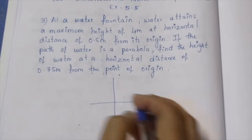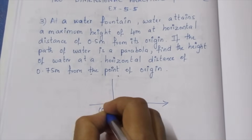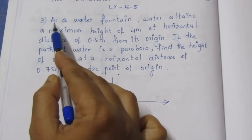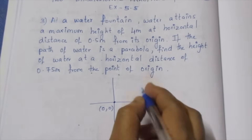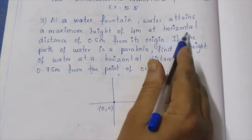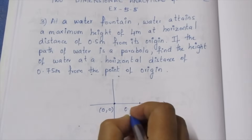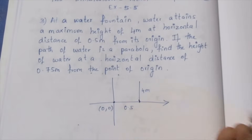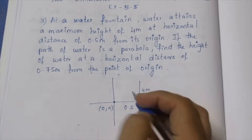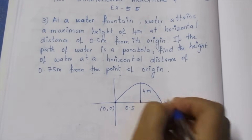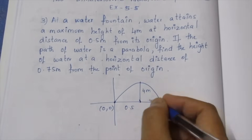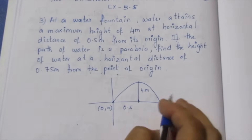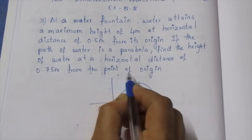If you look at the horizontal distance, there is 0.5 meter from the origin. At a water fountain, water attends the maximum height of 4 meters at a horizontal distance of 0.5. The height of the water is 4 meters. If the path of the water is a parabola, find the height of the water at the horizontal distance of 0.75 from the point of origin.